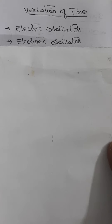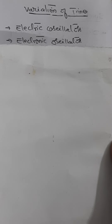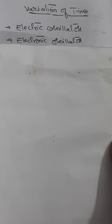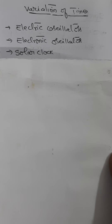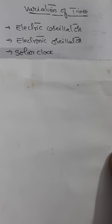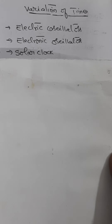Another type is the electronic oscillator, where vacuum tubes or junction transistors produce electromagnetic waves of high frequency. The small time period of such oscillations can be used for measuring small time intervals. The solar clock was based on the revolution of Earth around the Sun. However, careful measurements show that the period of rotation of Earth changes slightly from day to day and year to year, making the accuracy of the mean solar second questionable.